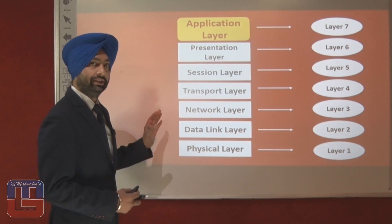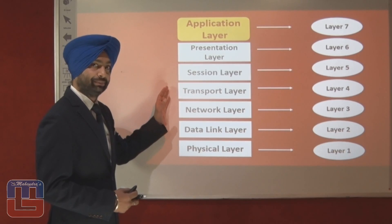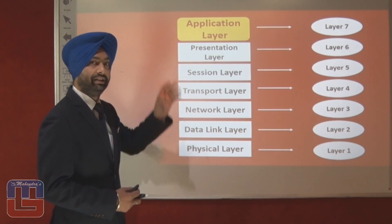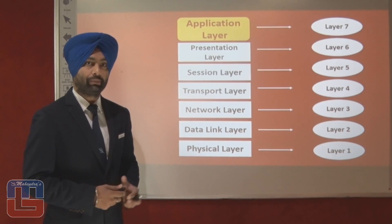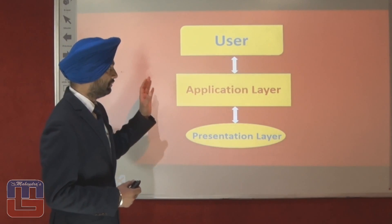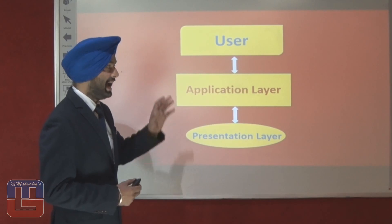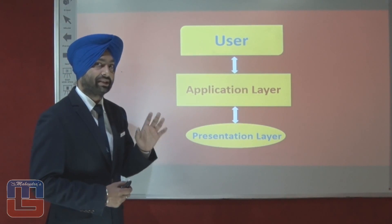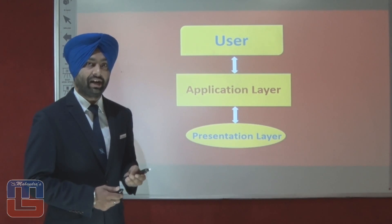The first layer is the physical layer, the second layer is the data link, the third layer is the network, the fourth is the transport, the fifth is the session, the sixth is the presentation, and finally the application layer is the 7th layer of the OSI model. The application layer is located above the presentation layer and is directly connected to the user — the user directly interacts with the application layer.